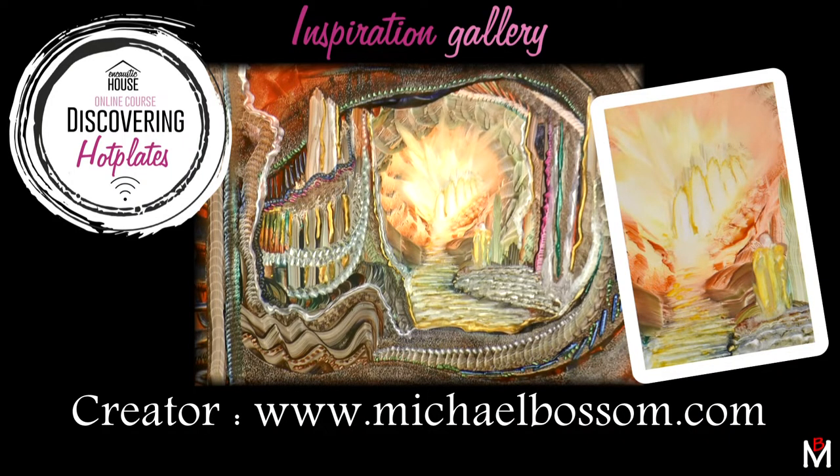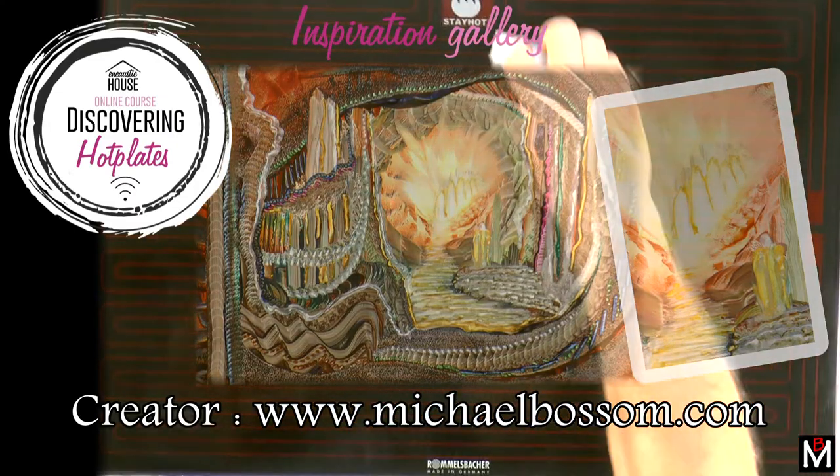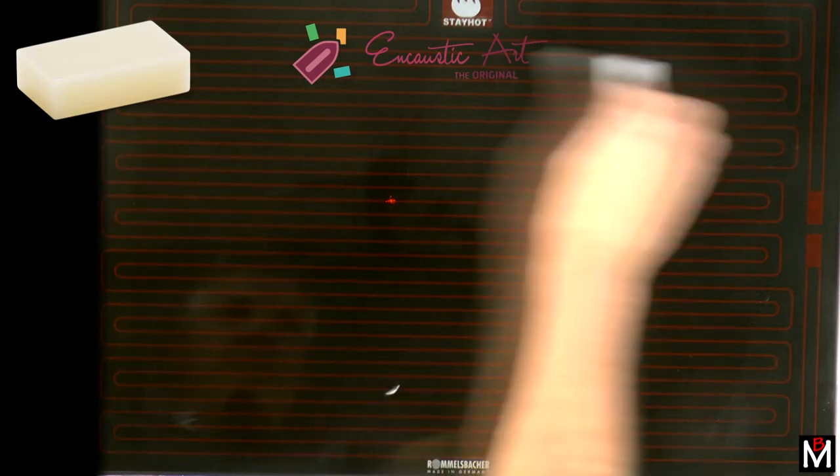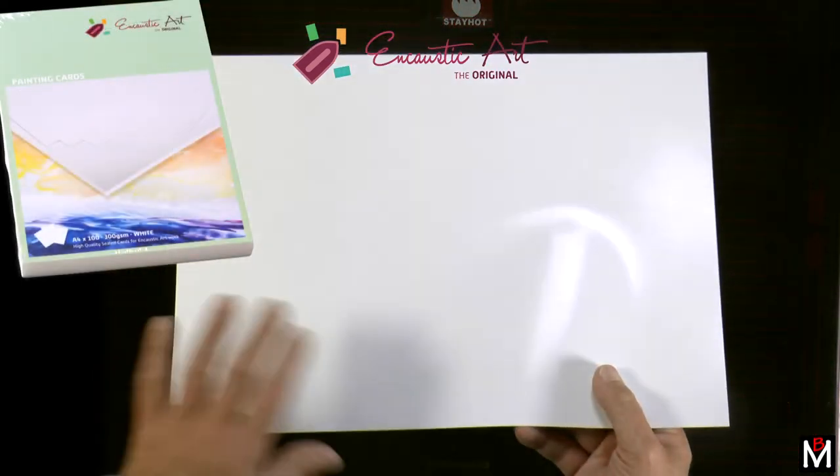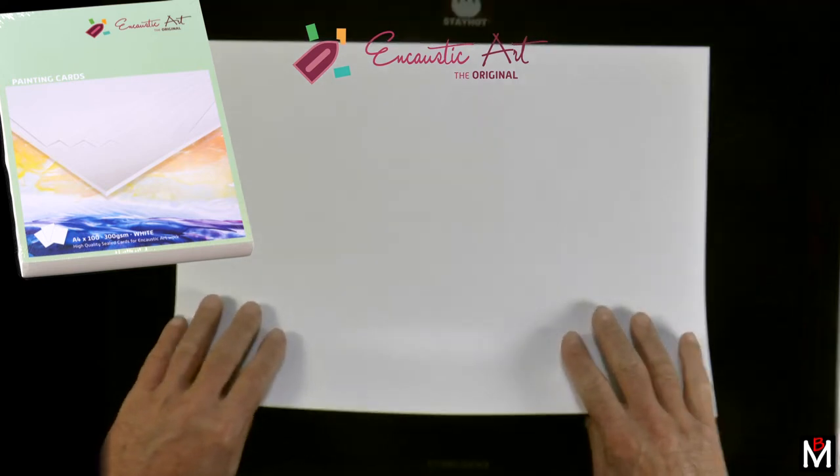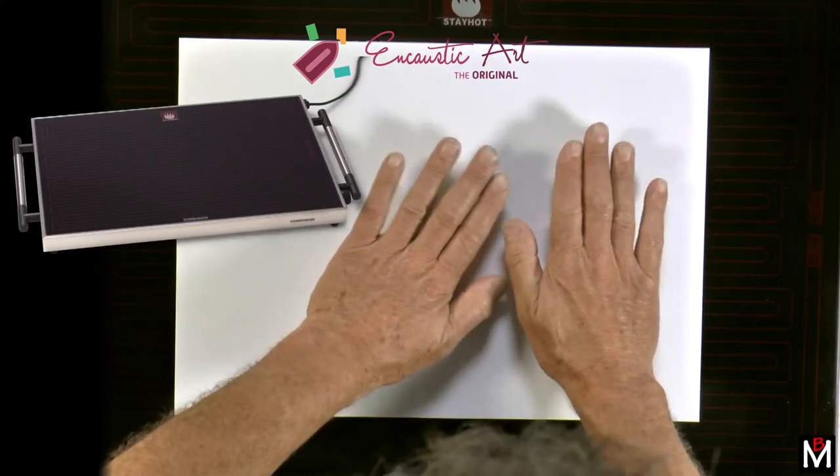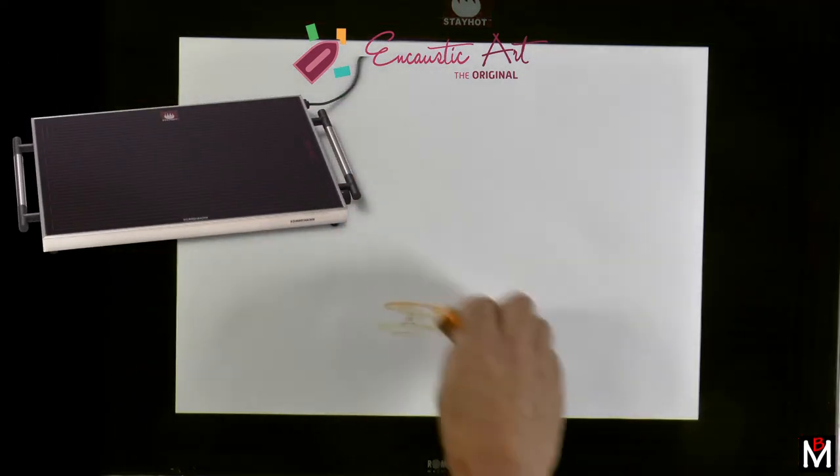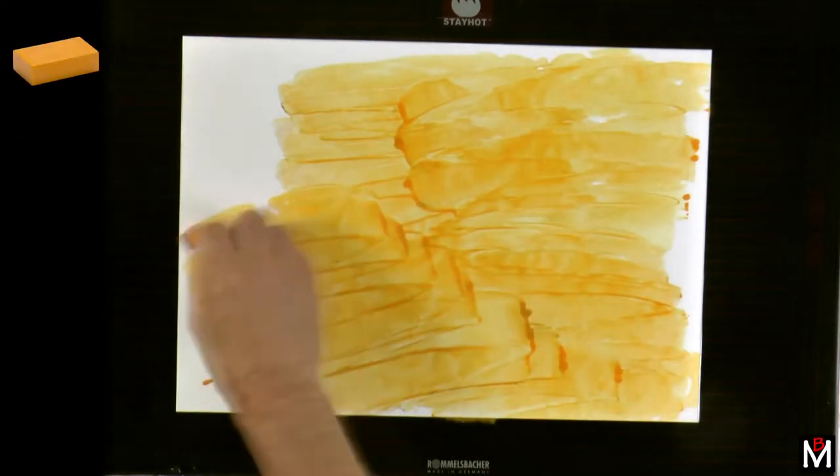This image comes from Discovering Hot Plates inspiration gallery and is called Angels Are Descending. Starting with encaustic art clear wax on the hot plate using A3 white encaustic painting card, and the hot plate itself - an electrical plate big enough to heat this card perfectly during the whole process.